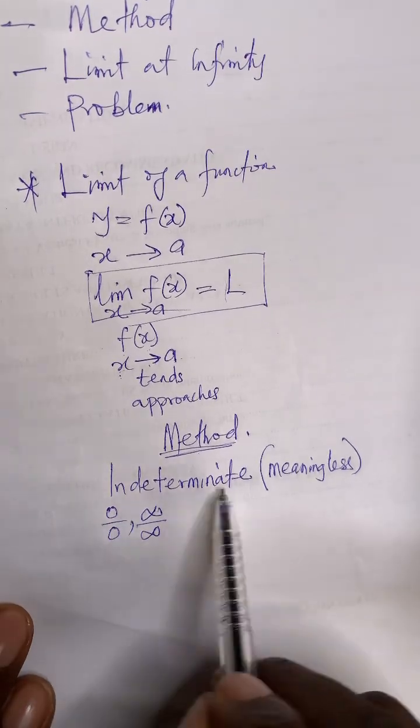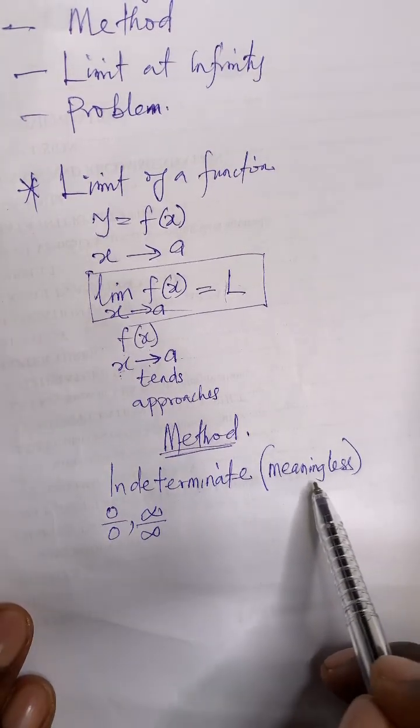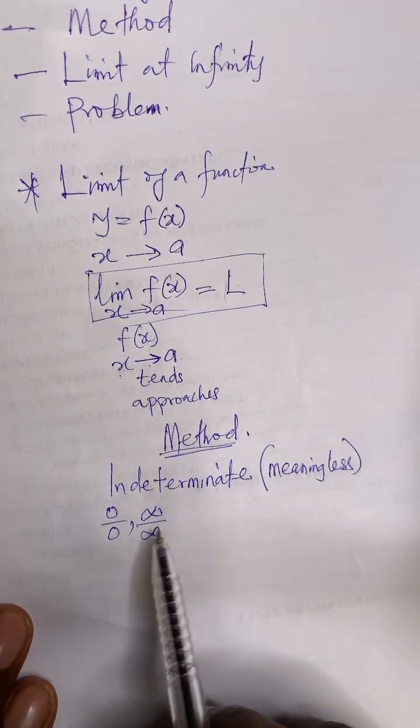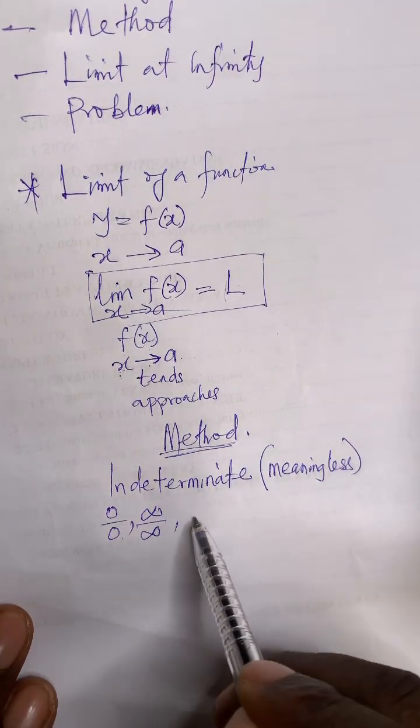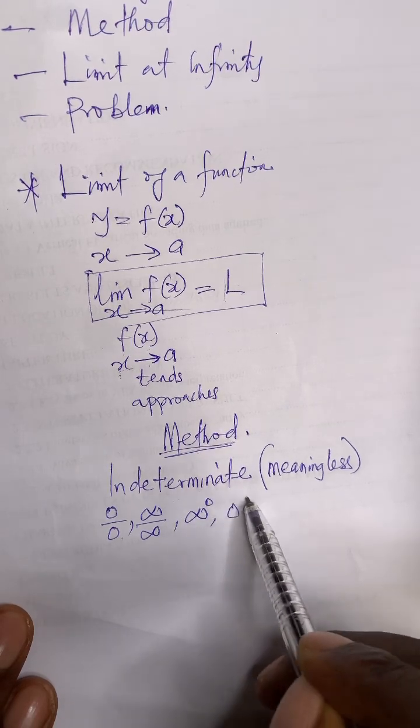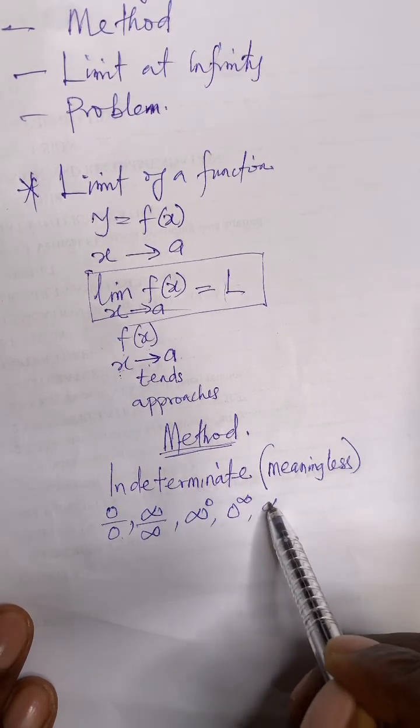When you solve problems, you encounter these kinds of things that are indeterminate. It means they give you no meaning, they're meaningless. When your answer or result gives you this, even if you get something like infinity to the power of zero, even if you get zero to the power of infinity, sometimes you get infinity.